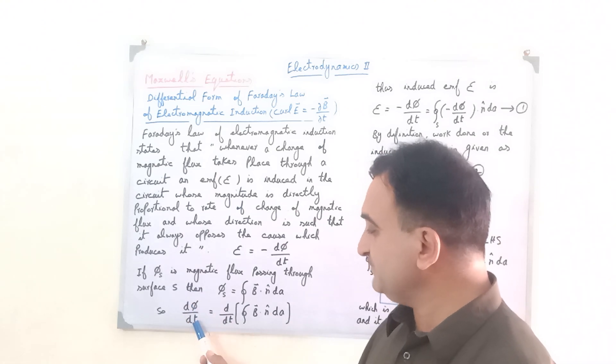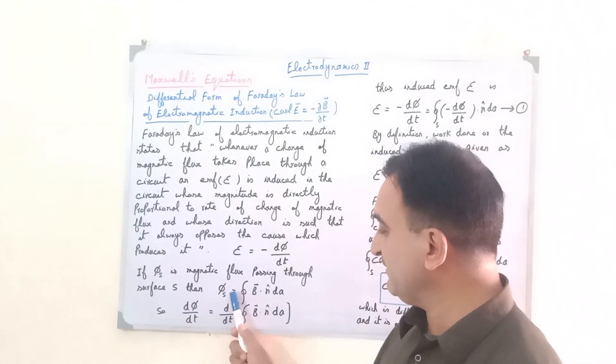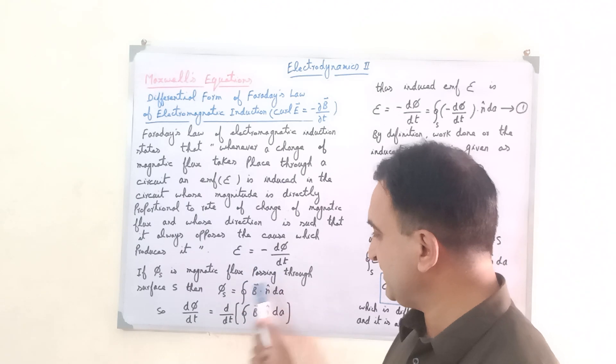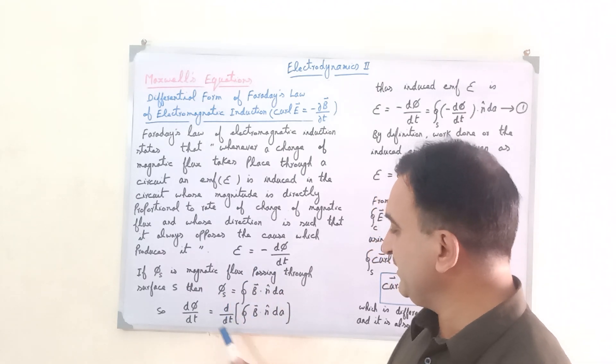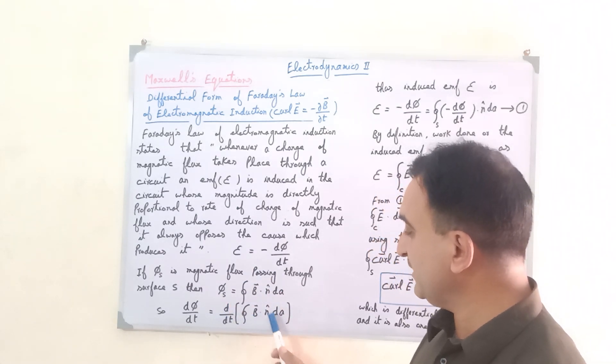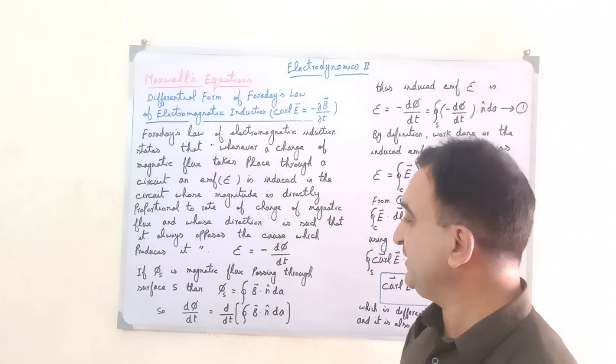So d phi by dt is equal to d by dt of the integral B dot n unit vector dA. This is equal to d phi by dt.